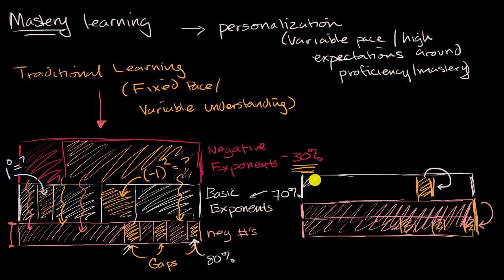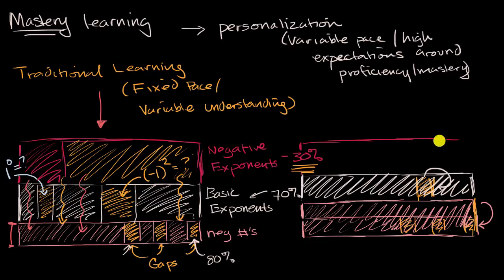And so the whole principle here is, in mastery learning, the student is building a really, really solid foundation so that they never hit that wall when they get to negative exponents. They understand their negative numbers well. They understand their exponents well. And so then they can just keep on going. And at Khan Academy, we believe that if you learn this way...